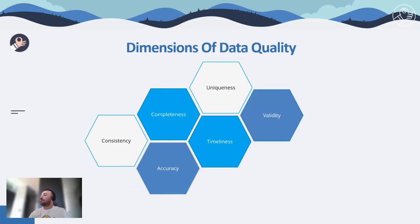The sixth dimension is validity, defined as the extent to which data conforms to the expected format, type, and range — for instance, a month value should be between 1 and 12. These six dimensions are almost always expected for all qualified datasets. However, for datasets consumed by AI models, there are two additional dimensions that must be considered in data quality checks.